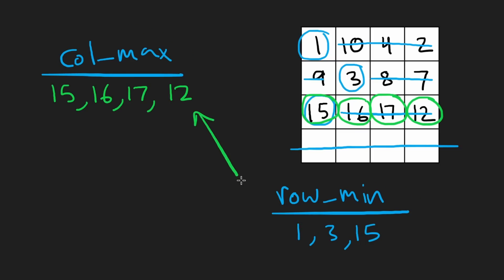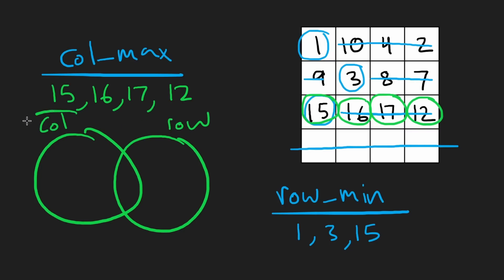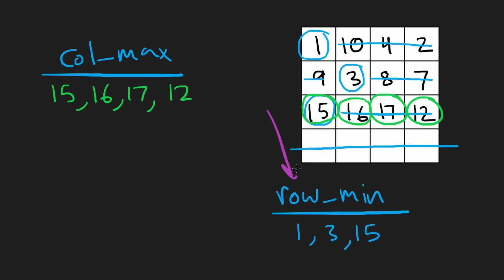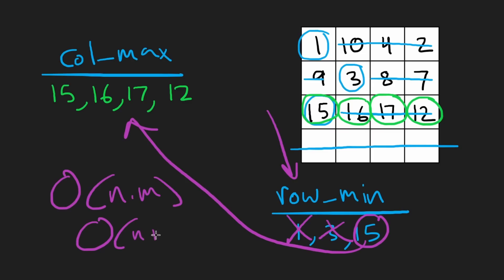We have two sets: the column maxes and the row minimums. We want the sweet middle — the intersection — because those are the numbers that are the minimum in the row and maximum in the column. In terms of coding it, you just iterate over one of them and check: is this number in the other set? 1 is not in column maxes, 3 is not, but 15 is the only one that belongs to both. So 15 is the result. This is n times m time and n plus m space.